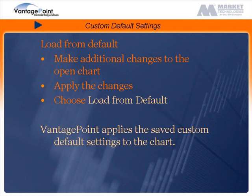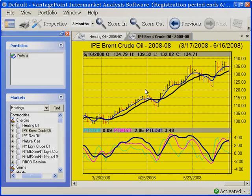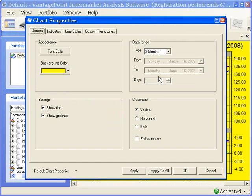In this next example, we will make some changes to the appearance of this default chart. We will apply these changes and then see how load from default can easily return the chart to the default selection. Now, we will make some changes to our new default chart. Go to the properties screen and let's change the background color from yellow to blue.